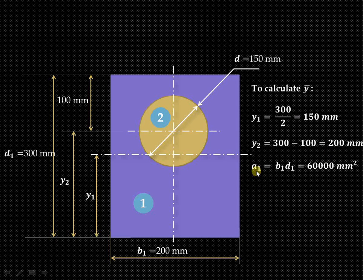Area of the rectangle a1 is b1 × d1. This is width, that is 200, and depth is 300, so it is 60,000 mm². a2 is the area of this particular circle, that is π/4 × d².